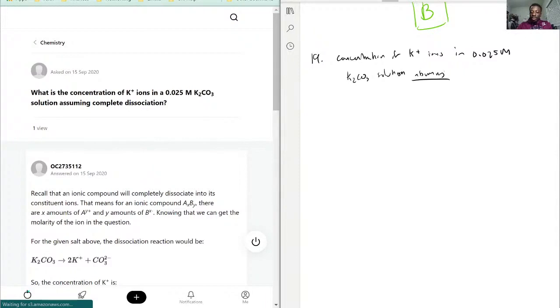So what this is asking for is first write the formula. We have K2CO3, that is potassium carbonate, and we're assuming complete dissociation. So we have potassium floating around plus carbonate.